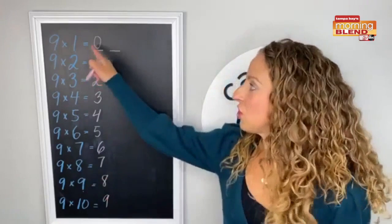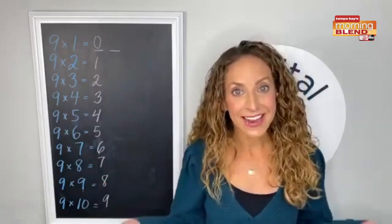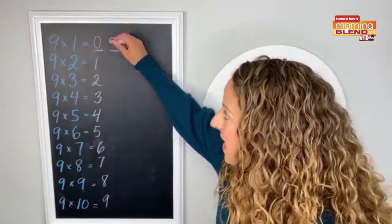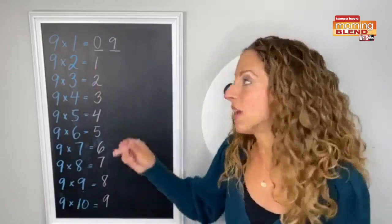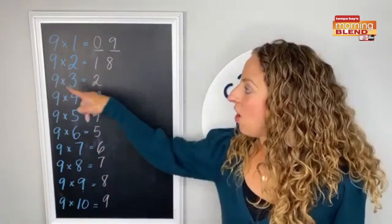When we're multiplying by nine, the two digits in the answer added together make a total of nine. How cool is that? So what number goes with zero to make a total of nine? Nine. What number goes with one to make a total of nine if I'm adding them together? Your child should know if they've reached multiplication, they should know their addition facts. They should know eight plus one is nine. So once I put the eight there, I know nine times two is eighteen.